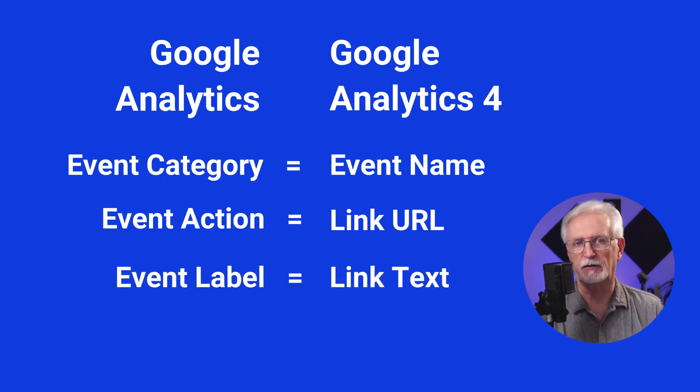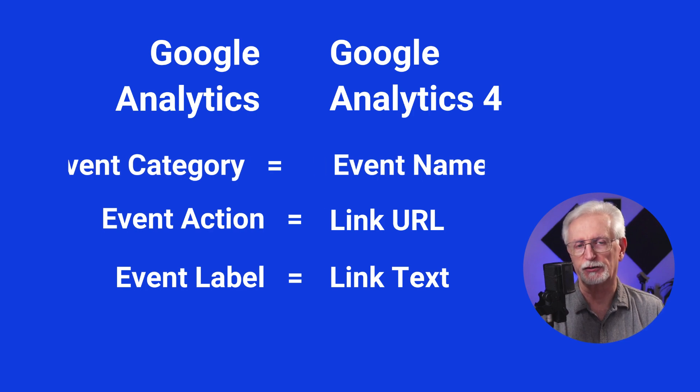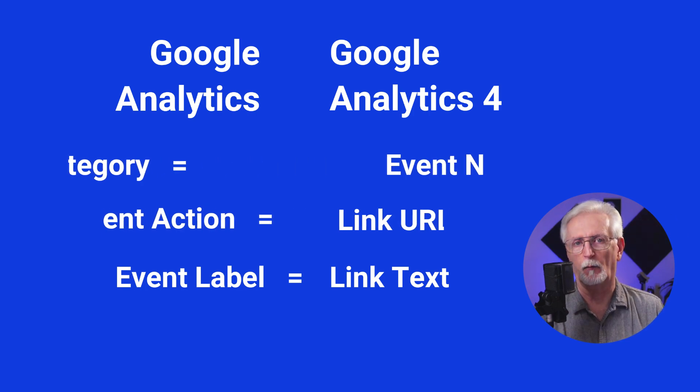So to set up event tracking for a button click in GA4, you just need to tell Analytics what the categories should be. That way you can find it later in the Analytics reports when you're looking for the results. You'll want to name it something meaningful like header CTA, sidebar CTA, or call to action button, for example.